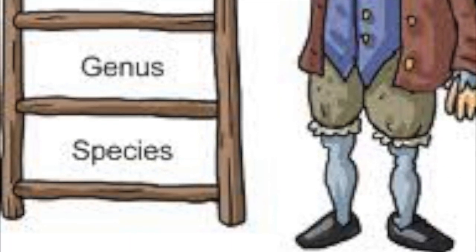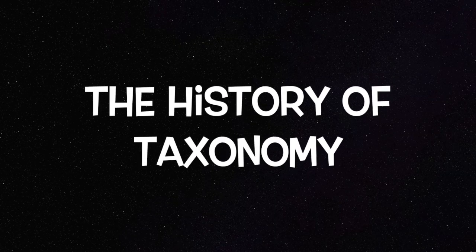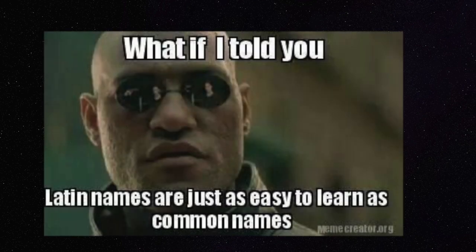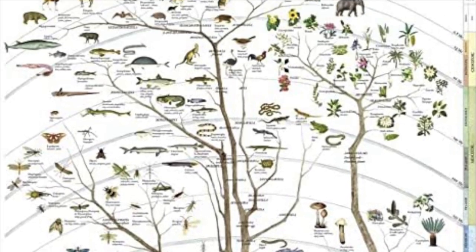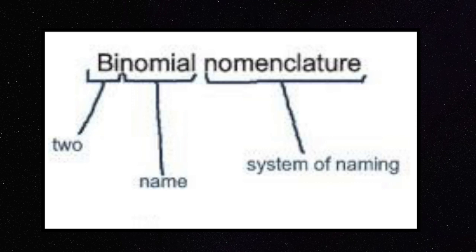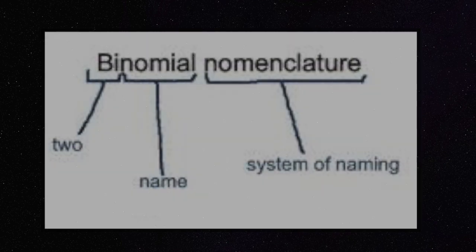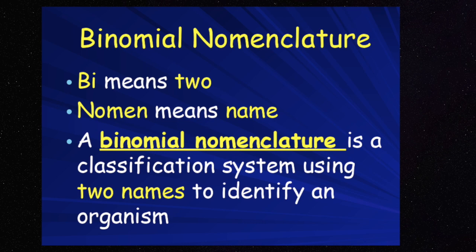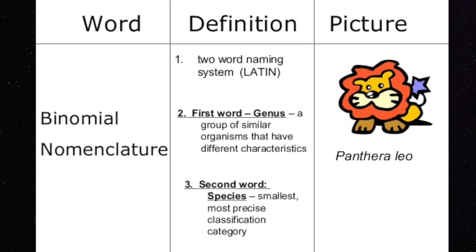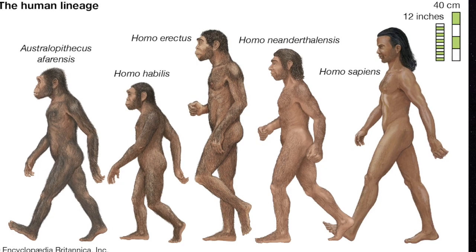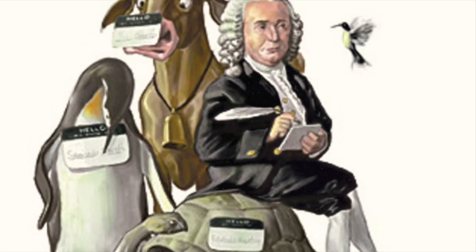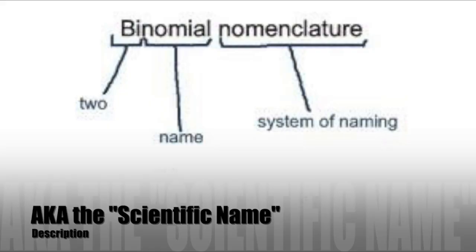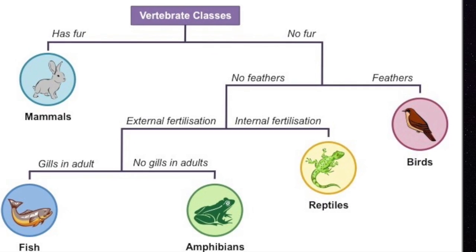In the last video, we talked about the history of taxonomy and why it's important. Taxonomy really helps scientists organize the life forms on planet earth. Because of taxonomy, scientists are able to come up with the binomial nomenclature of every species on earth. Binomial nomenclature means the scientific name — it's a Latin term that means two names. For example, the scientific name of humans is Homo sapiens. Taxonomy has also allowed scientists to create dichotomous keys and cladograms.